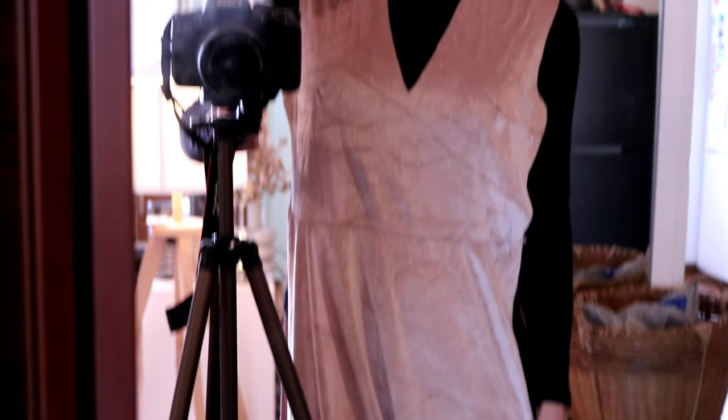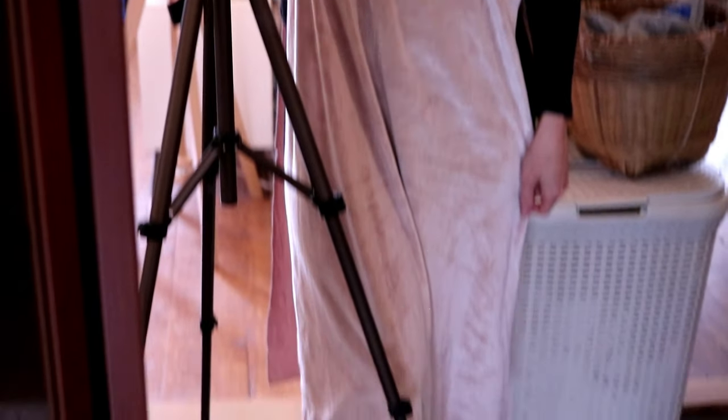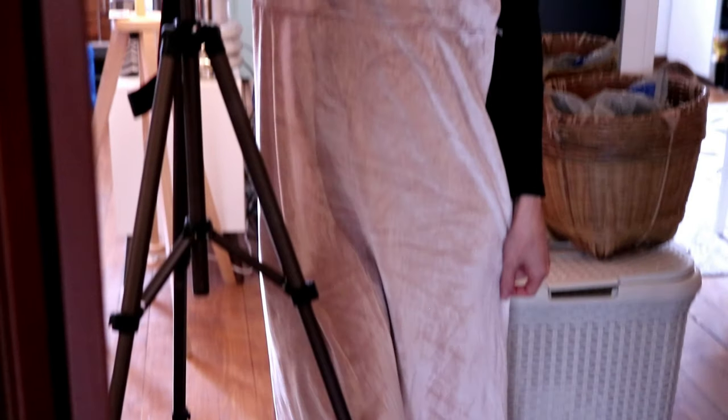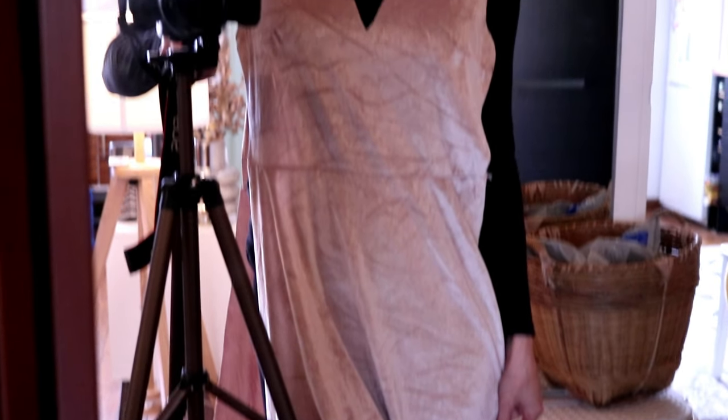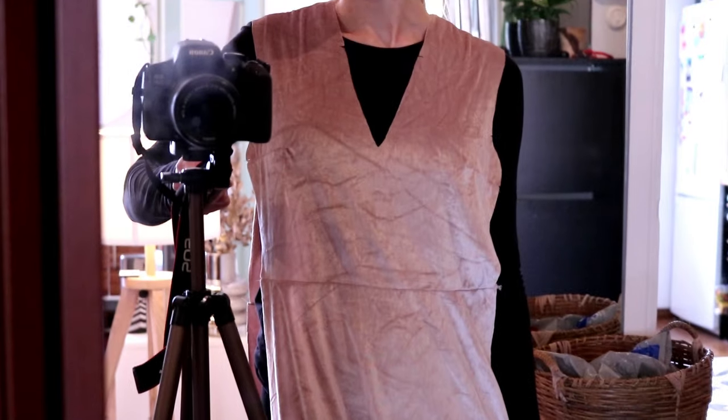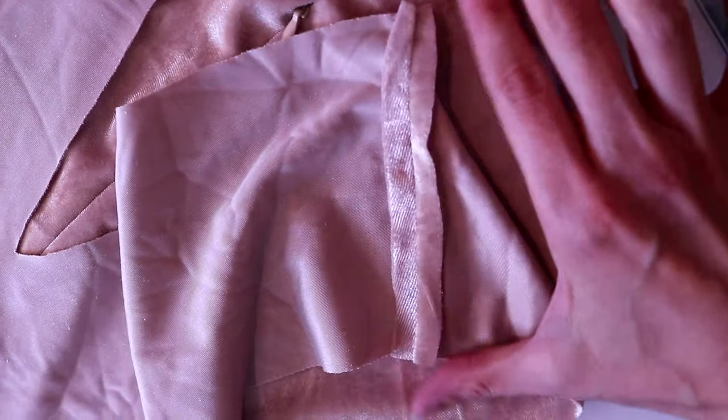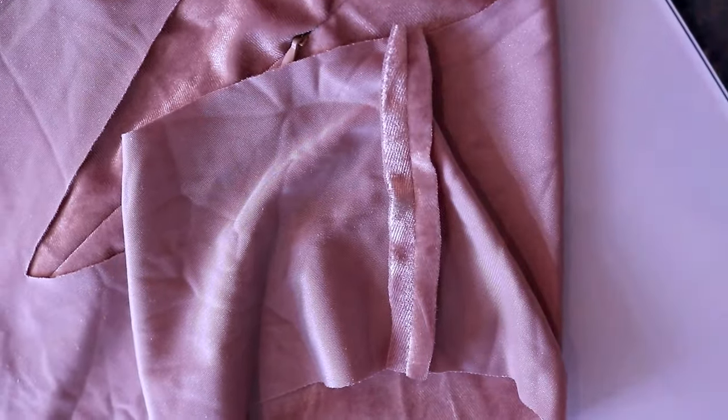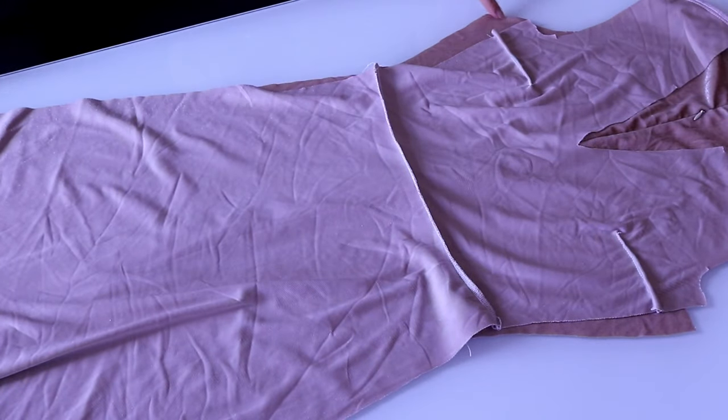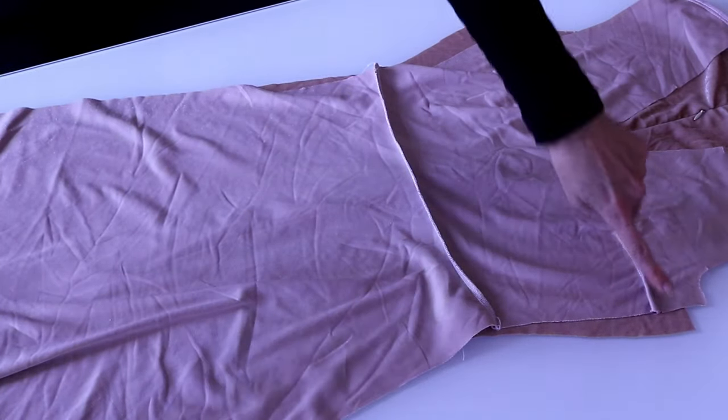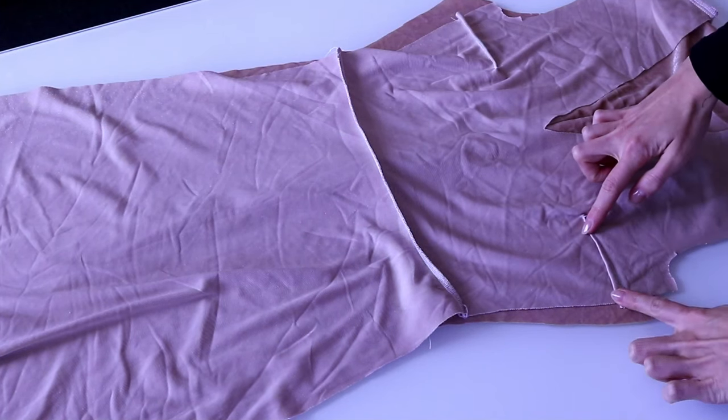Try on the dress and make sure that the bust darts sit at the right height. If any modifications are needed, remember to do the same ones on the facing as well. Press the shoulder seams open with your hands. Stitch the dress side seams with a straight stitch pressing the bust darts down.